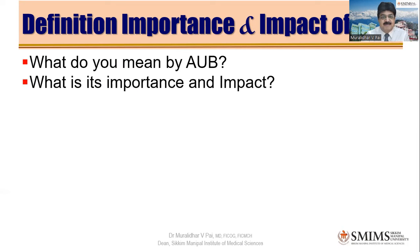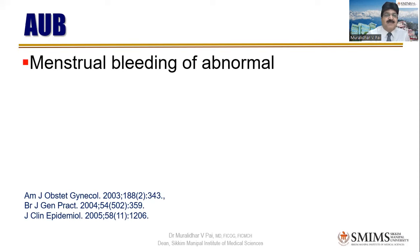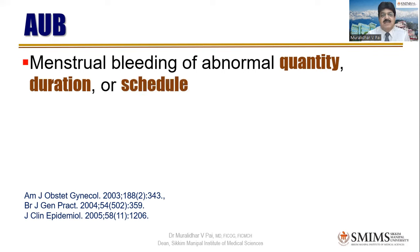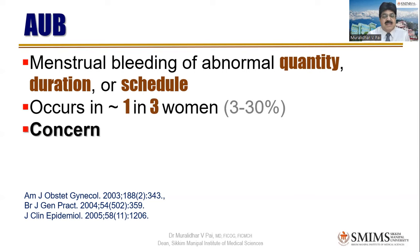AUB is menstrual bleeding of abnormal quantity, duration, and schedule. The abnormality could be in quantity, duration, or schedule — or one of the three. It need not always be present together in a single patient, but sometimes all three are present. Its importance is that it can cause anemia in patients, and it is very common — seen in about one in three women. Around 30 percent of patients who come to OPD will have complaints of heavy menstrual bleeding and will be diagnosed as AUB.